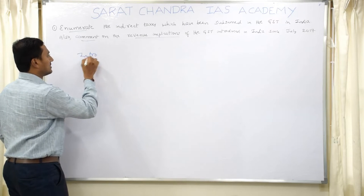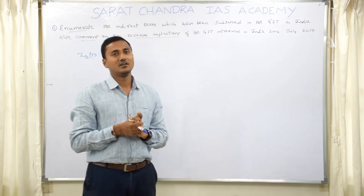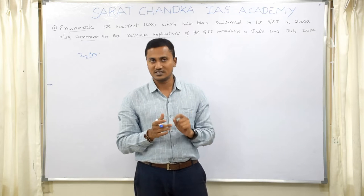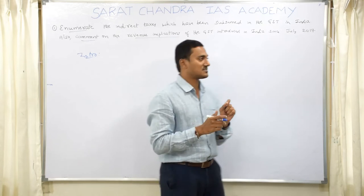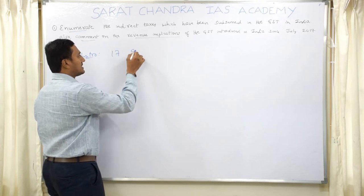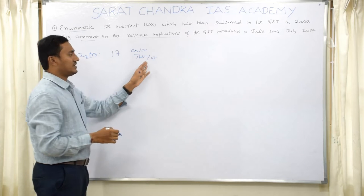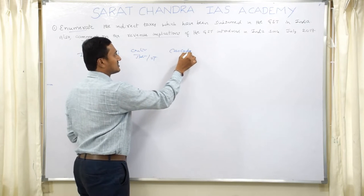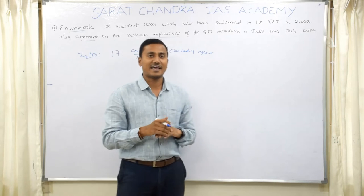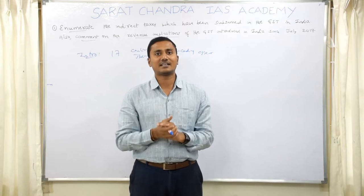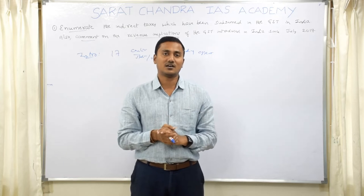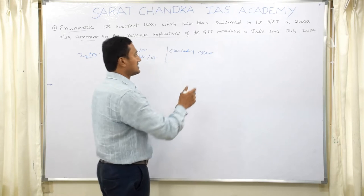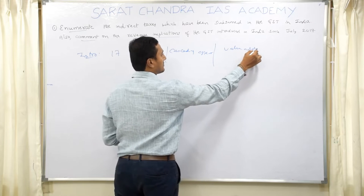Since this is a 10-mark question, keep the introduction very short — three to four lines. Mention clearly what you want to say about GST. You can state that 17 different taxes, both from the Centre and state and UT governments, have been subsumed under the GST, mainly to remove the cascading effect — the tax-on-tax effect — so everything can be consolidated into a single tax for easy monitoring and easy compliance for taxpayers. The idea is one nation, one market, one tax.